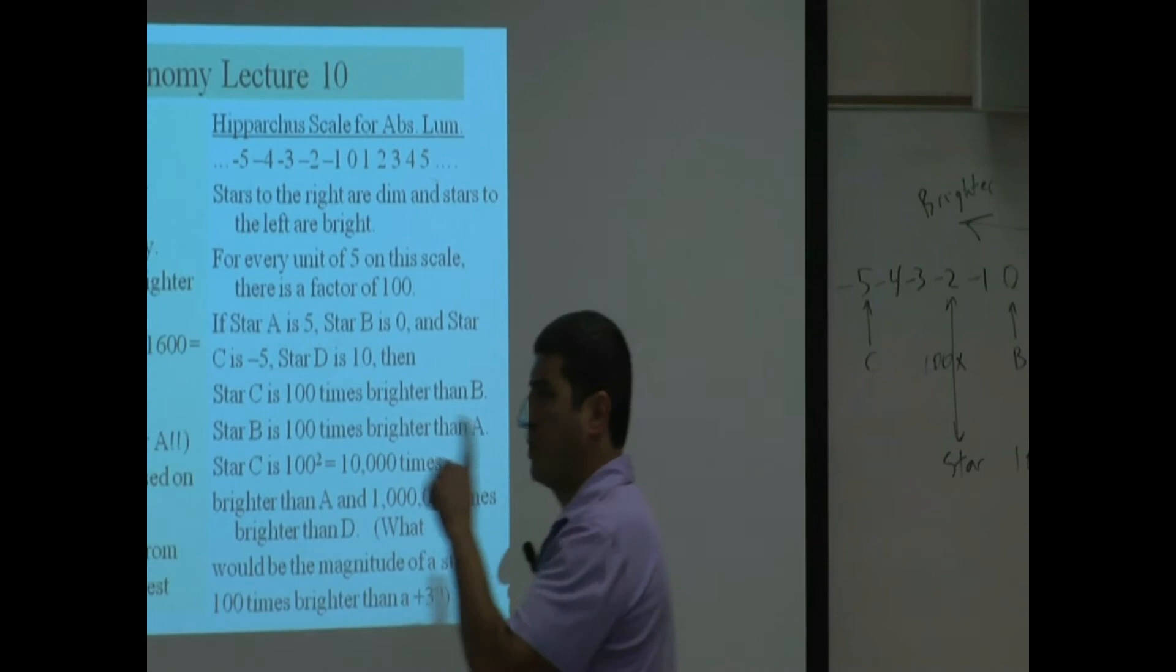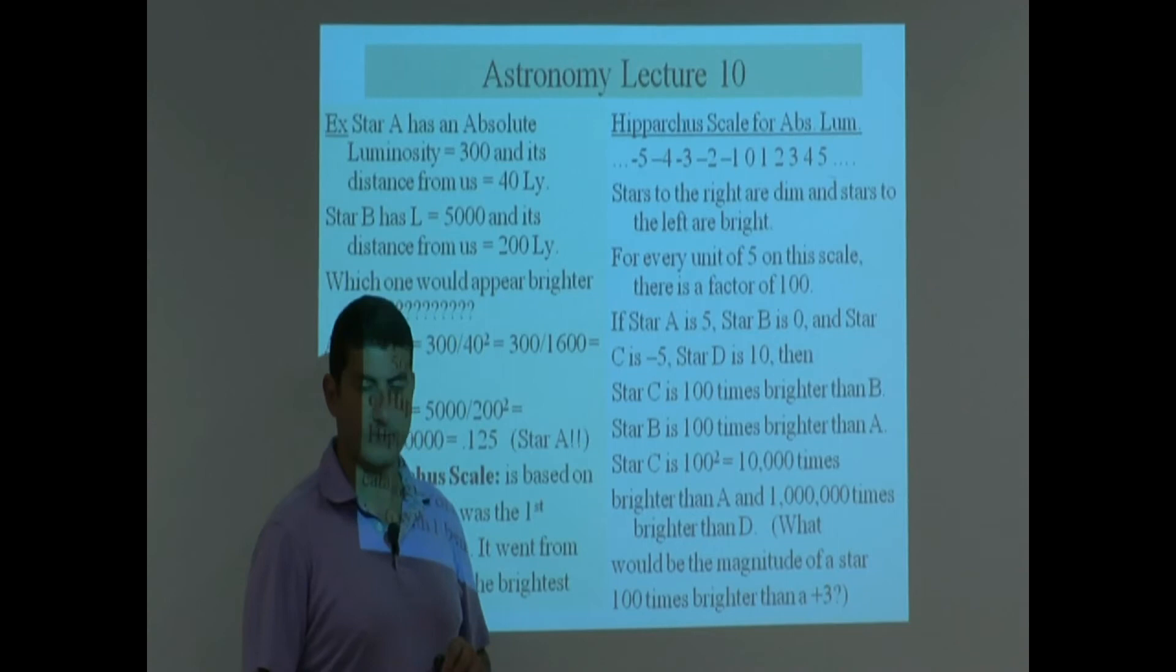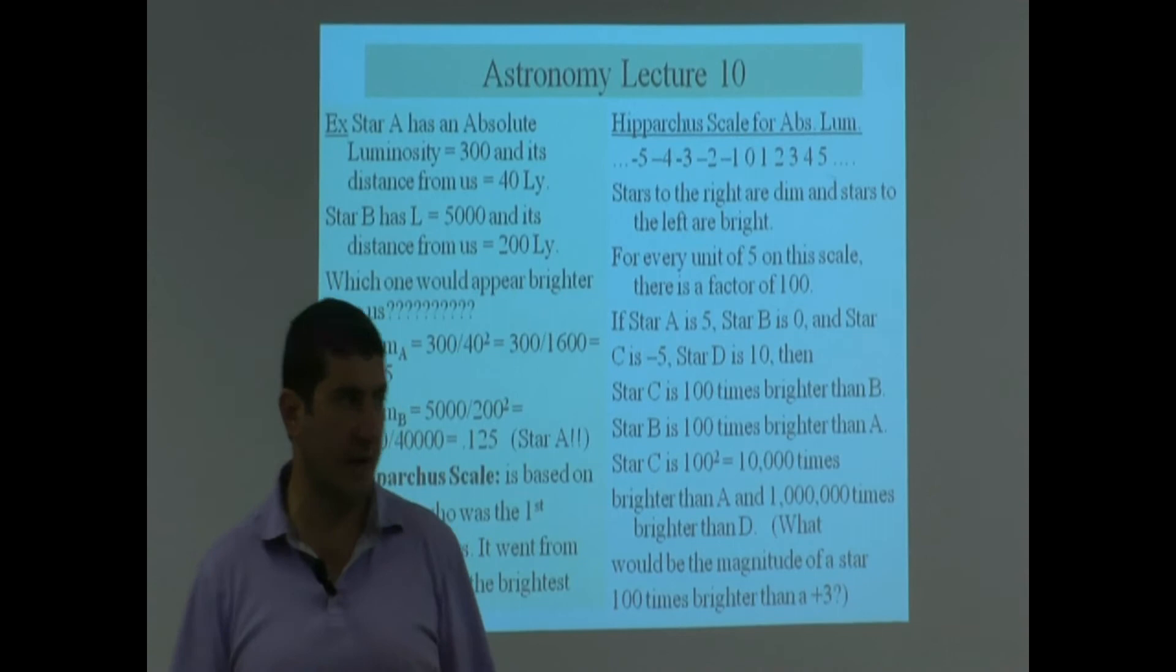What if I reword the question this way? What would be the magnitude of a star 100 times dimmer than a plus three? Eight. Good. You got the idea. 100 times dimmer, you go five units to the right. 100 times brighter, five units to the left.